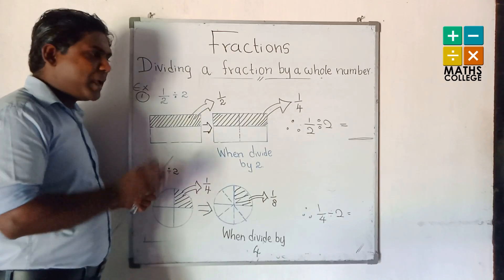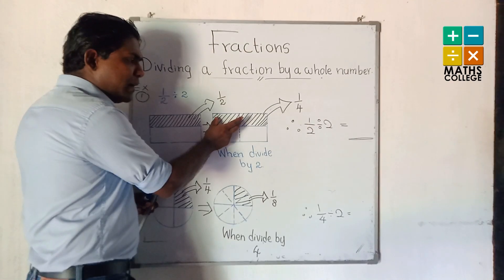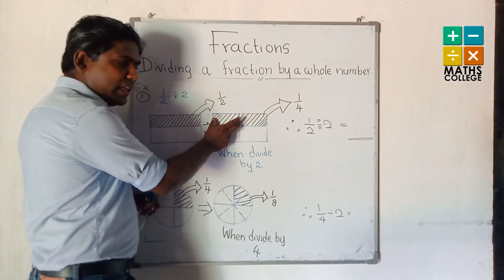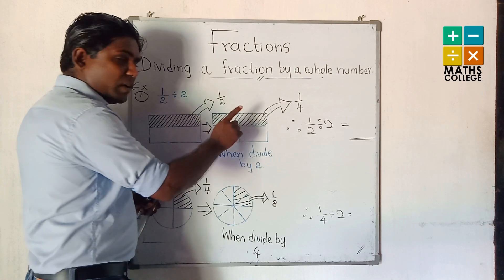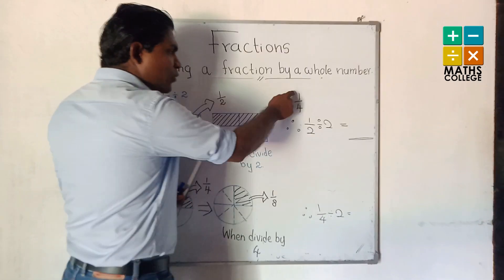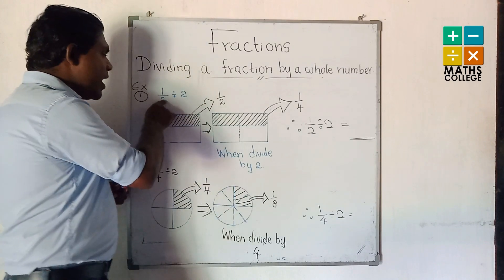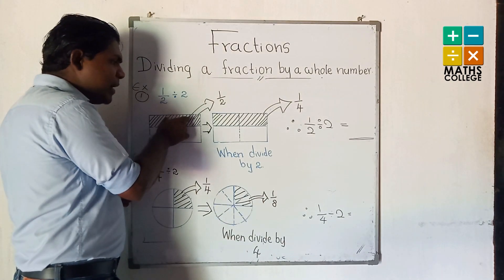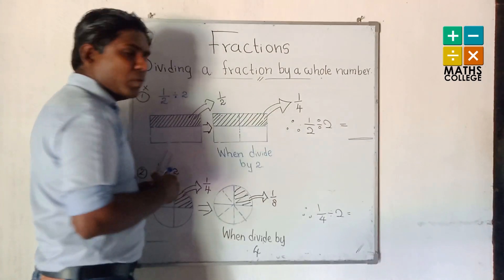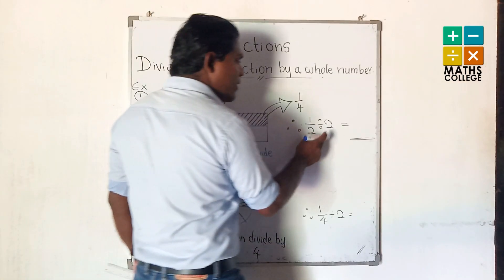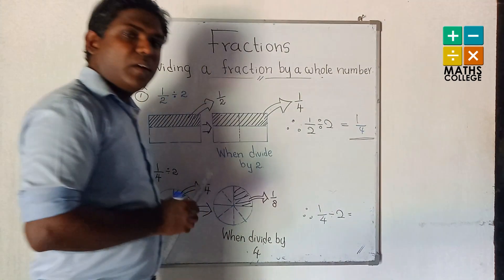Four parts. That means when we divide by 2, we can say the denominator is 4, and 1 part remains shaded. That means the answer is 1 part — 1 upon 4. Half divided by 2: 1 part out of 4. Because half divided by 2, the answer is 1/4.